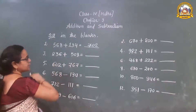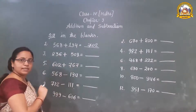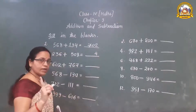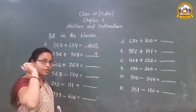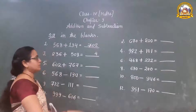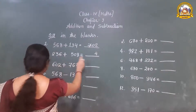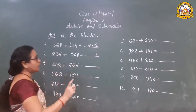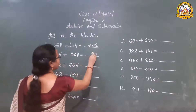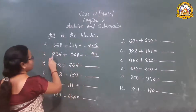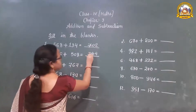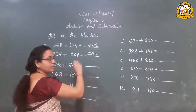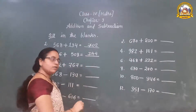8 plus 6 is 14, carry 1. 3 plus 1 is 4. 2 plus 5 is 7. So what is our answer? Our answer is 744.